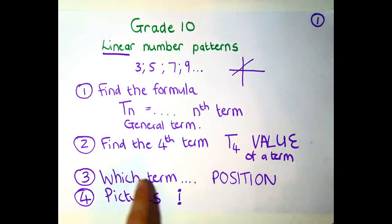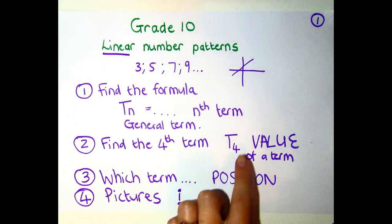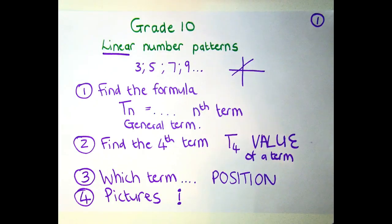They'll ask you for the nth term or the general term, which is the Tn. They can then ask you to find a particular term, so they want a value.